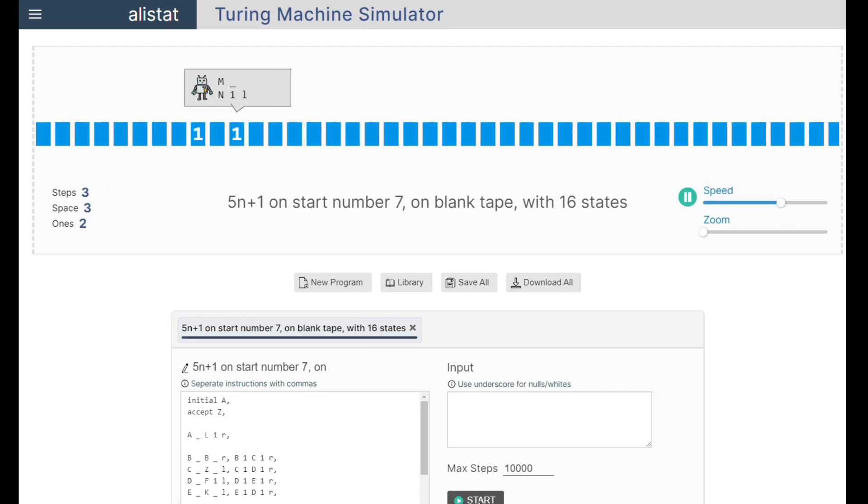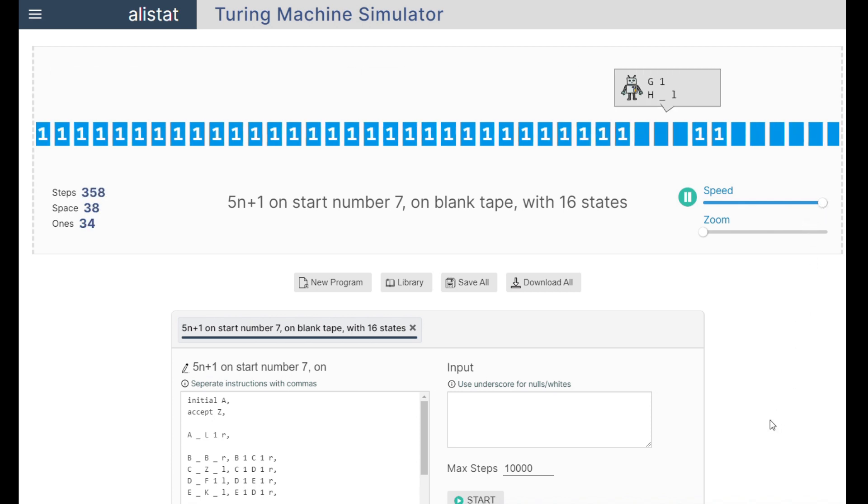And here's our machine running 5N plus 1 on start number 7, beginning with a blank tape. So this time we're going to start with a blank tape, and magically add 7 ones to the tape, and then go to state B for begin. And we'll determine that this is an odd number of 1s, so we'll start deleting each 1 and replacing it by 5 ones. And that'll make 35 ones in total, and we need to add one more for the 5N plus 1 to make 36.